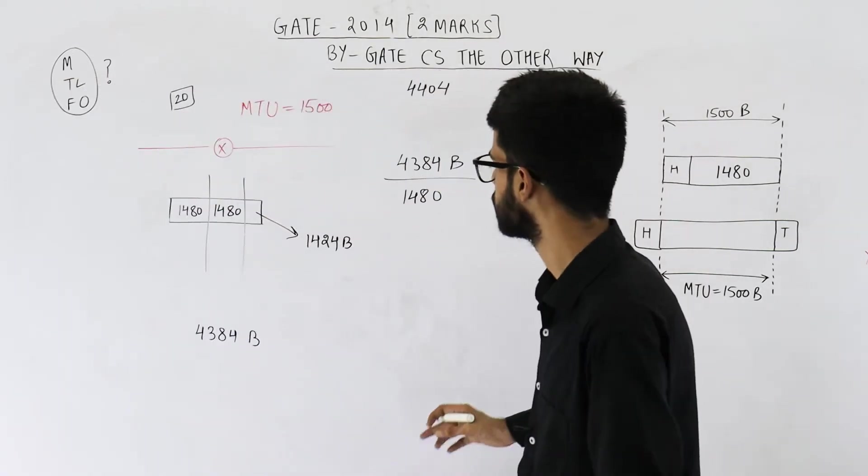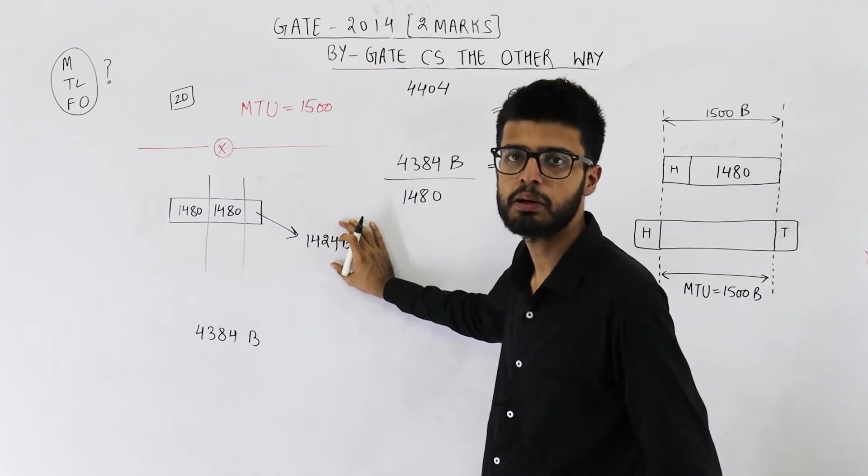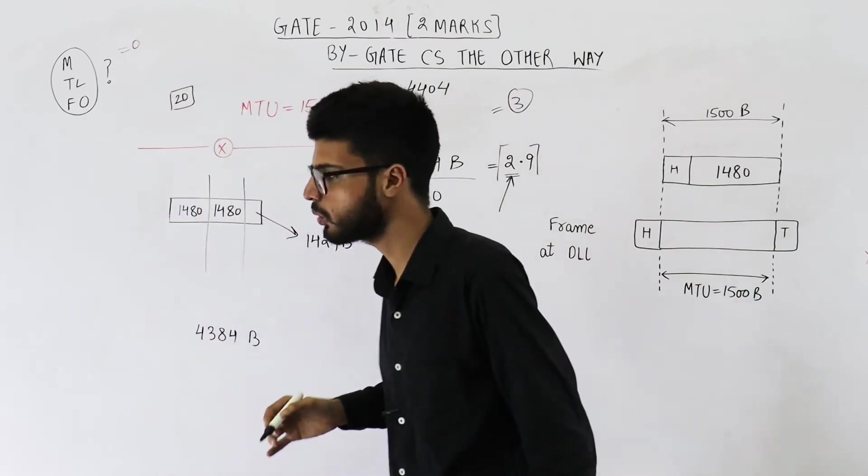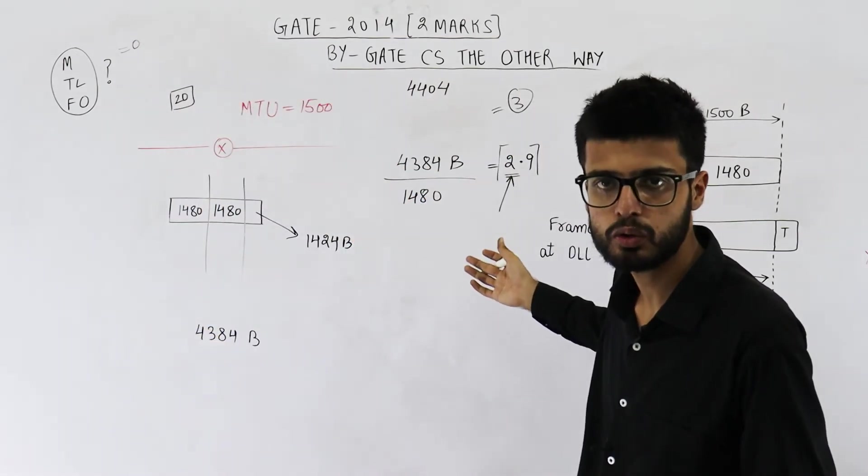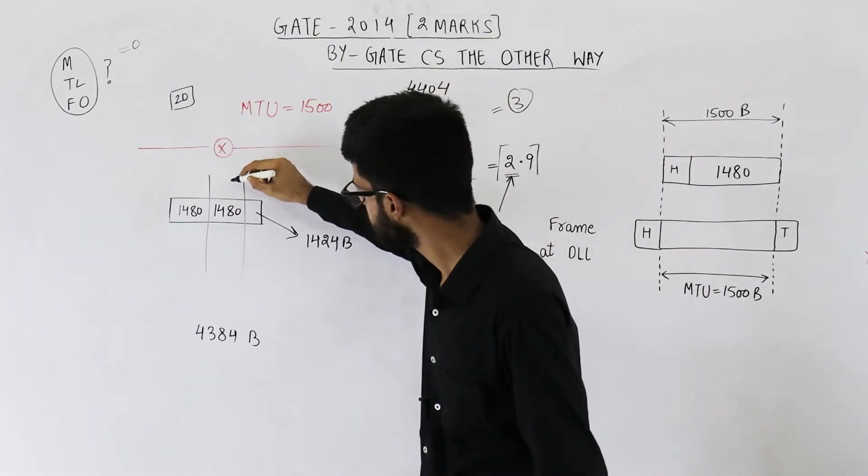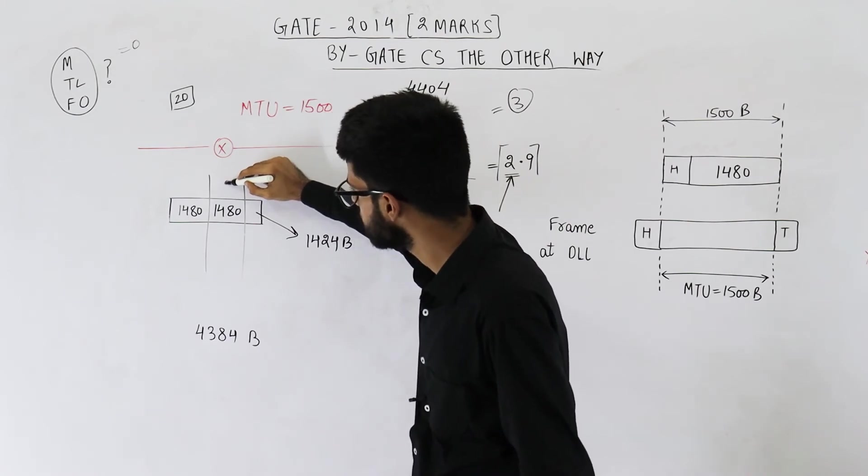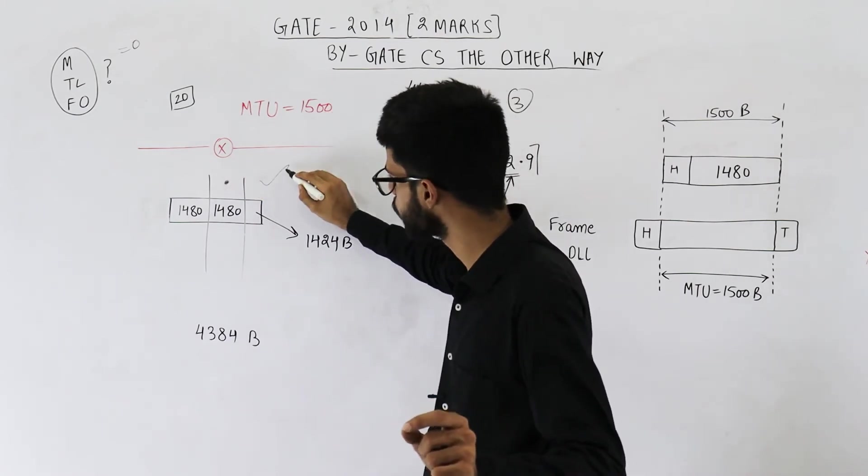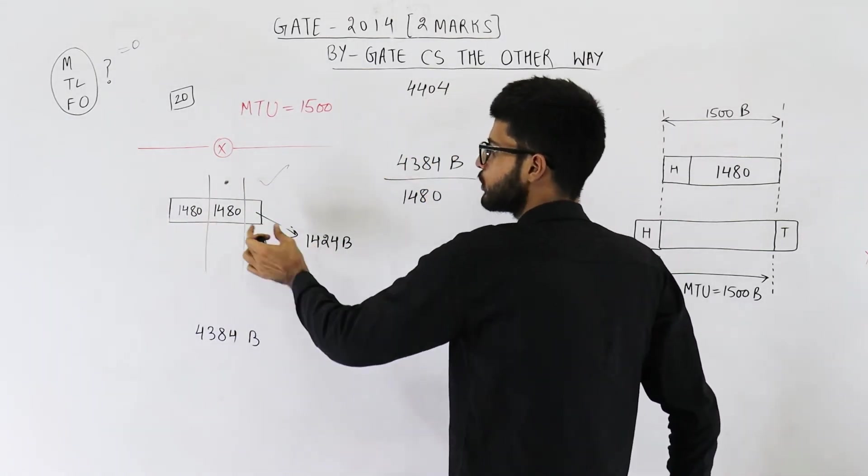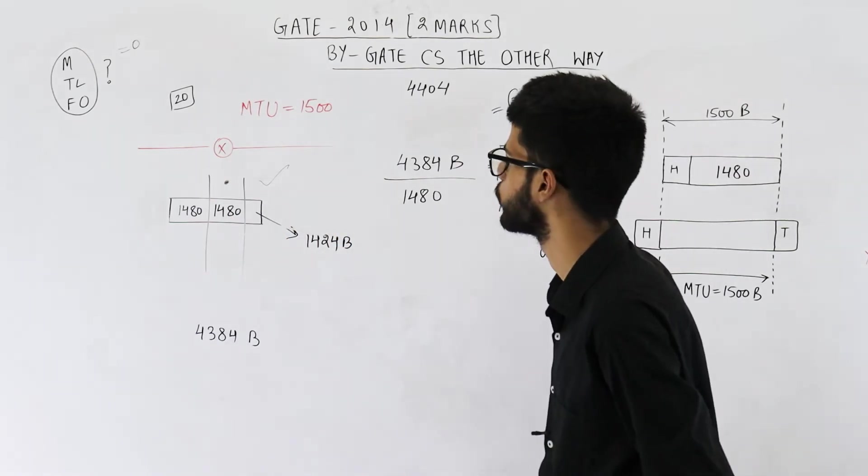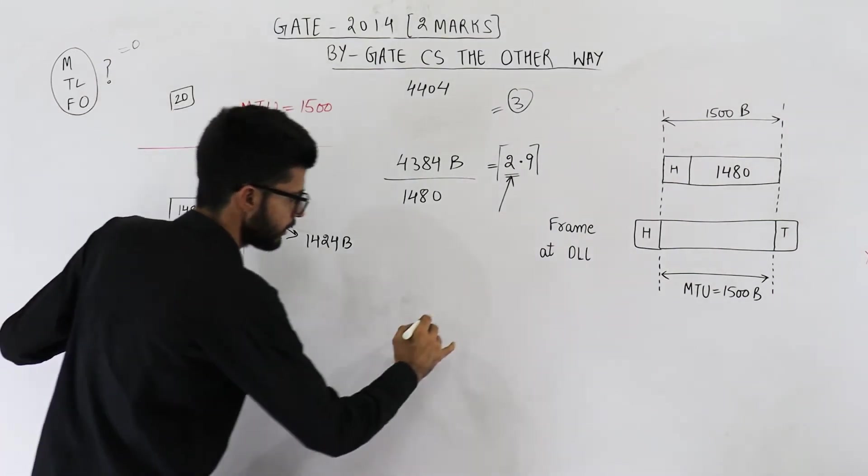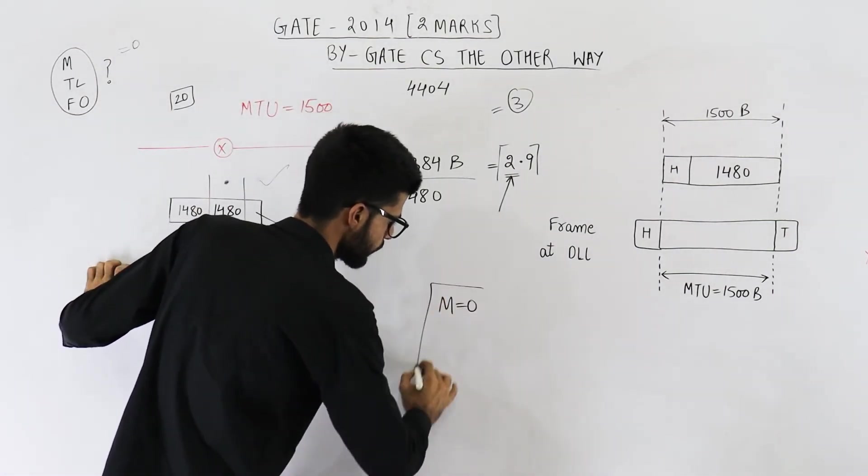Now see, for this last fragment, what will be the value of M-bit? Obviously M-bit is going to be 0. So M-bit is 0. Why is M-bit 0? M-bit means are there more fragments which belong to this datagram. No. This is the last one. There are no more fragments. So M-bit is 0 for this one. For this fragment M-bit will be 1 because there are more fragments. For this one also M-bit will be 1 because after this fragment there are more fragments which belong to this datagram only. Anyways for the last one or third fragment M-bit is 0. I am just writing it here. I am writing answer here. M-bit is equal to 0.